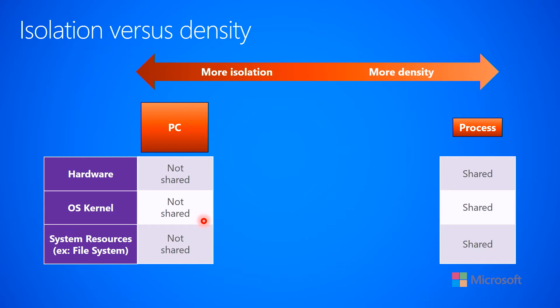If you're using a lot of memory on one PC, it doesn't affect what's happening on the other PC. And then there are system resources, like the file system, or on Windows, the system registry. If you have different PCs with different operating system kernels, those system resources are not shared. So you have a lot of high isolation between these PCs — what happens on one does not affect the other.